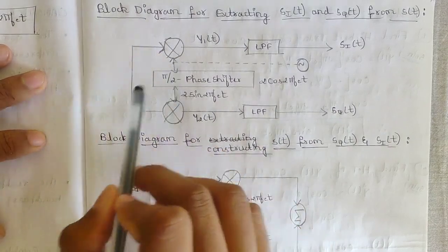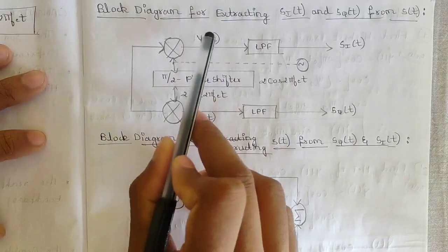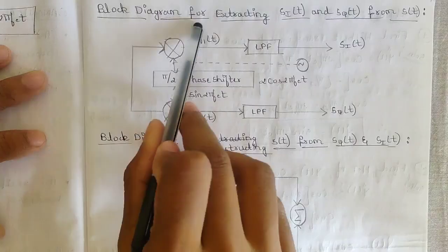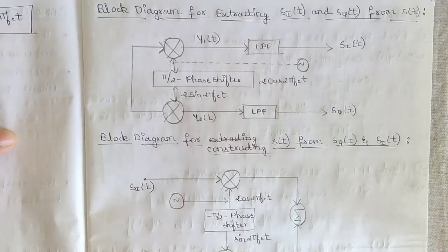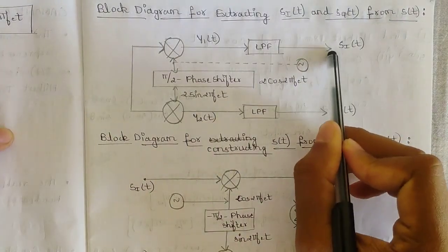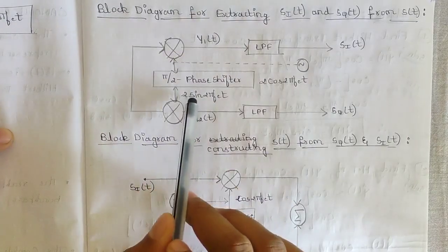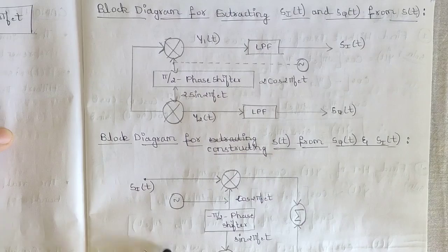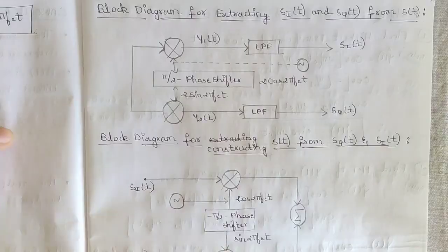From s(t), two components are interchanged via a phase shifter between y1(t) and y2(t), then passed through a low-pass filter so only the allowed frequencies pass. The outputs are the in-phase component (multiplied by cos(2πf_c·t)) and the quadrature phase component (multiplied by sin(2πf_c·t)).